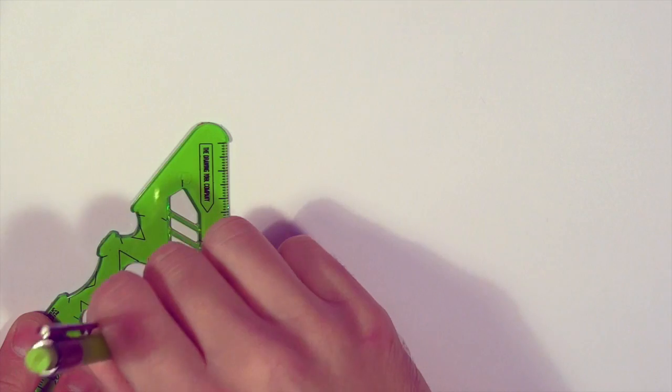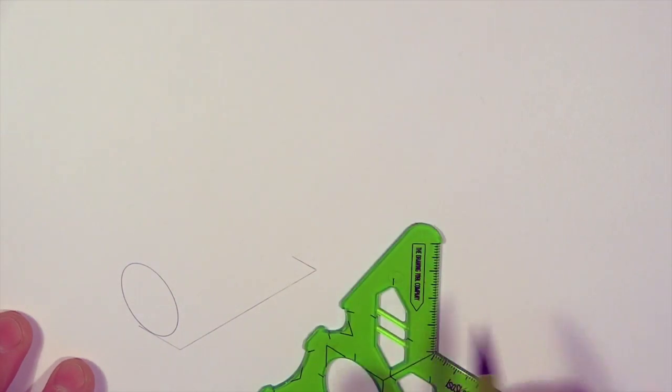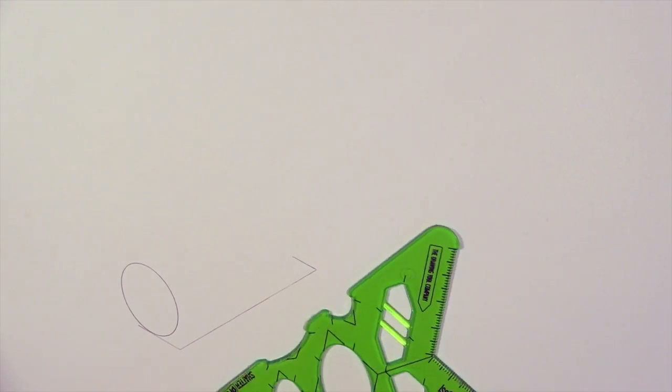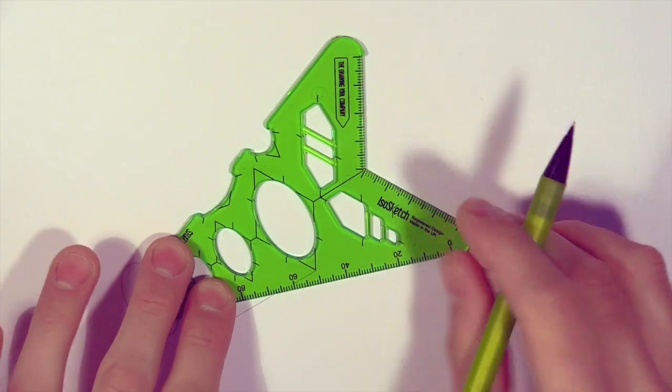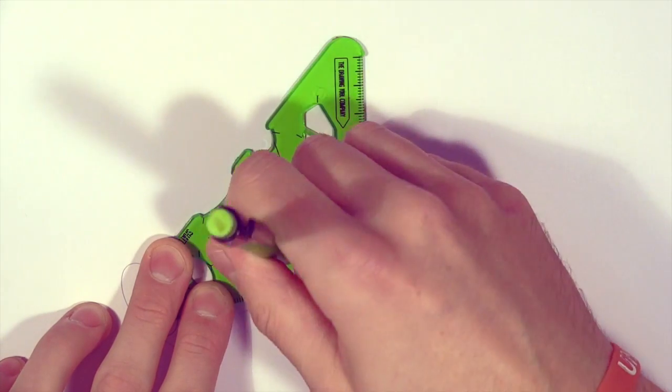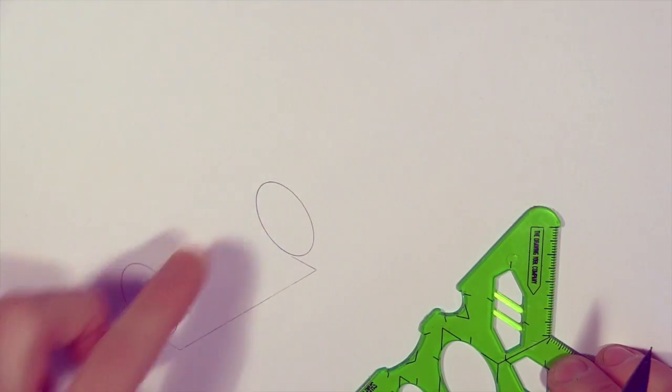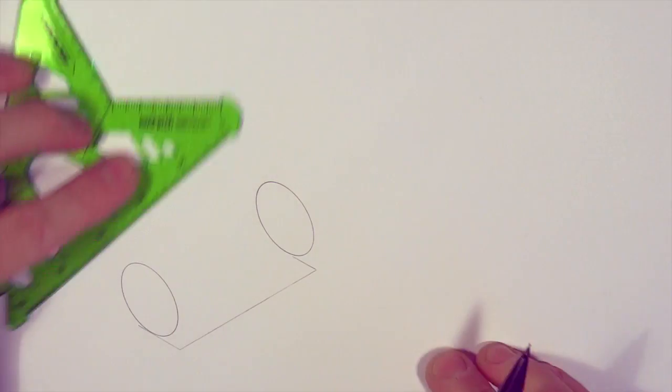So just using the template, drawing around the ellipse, and then we're going to use the same technique on the top there, just using that line we've drawn and lining up the corner of the tool with the end of that line.